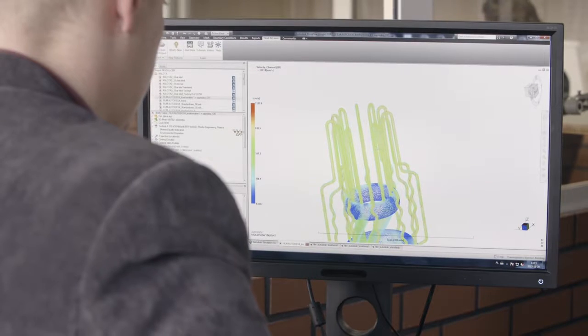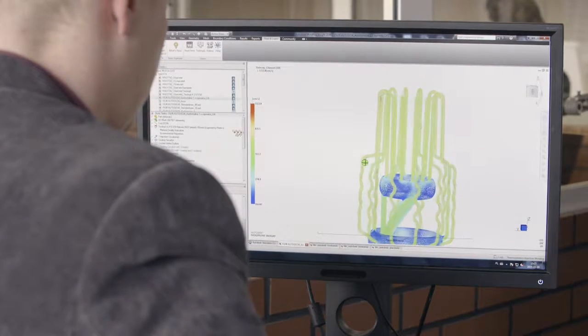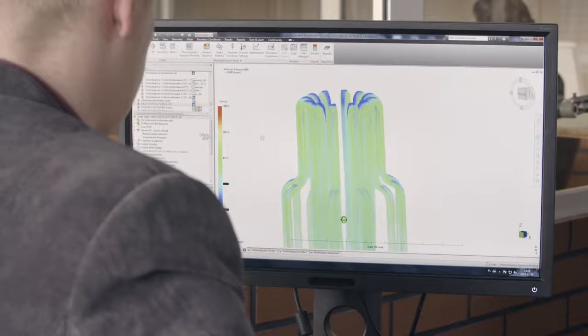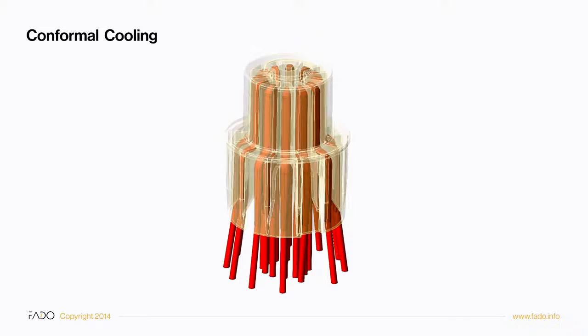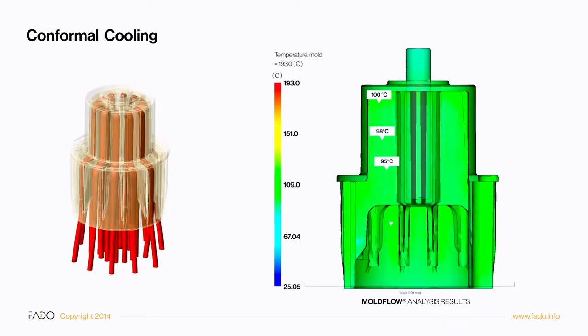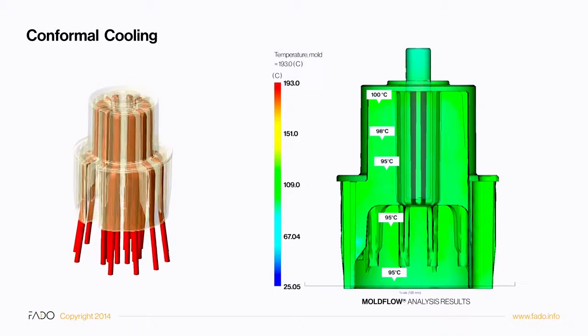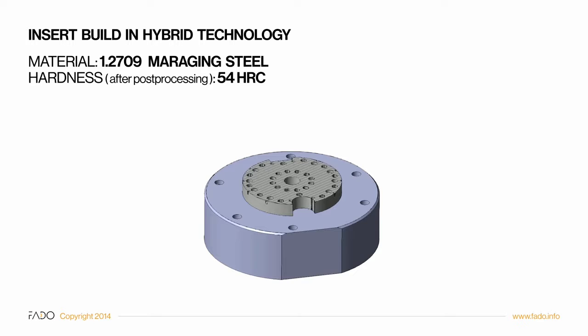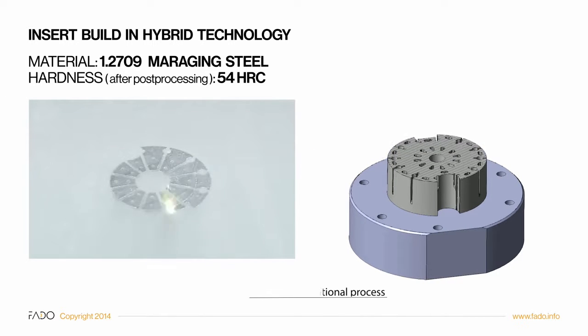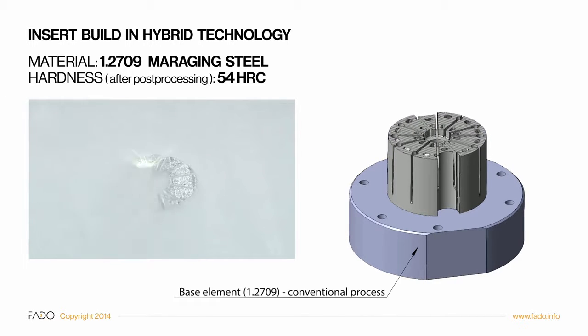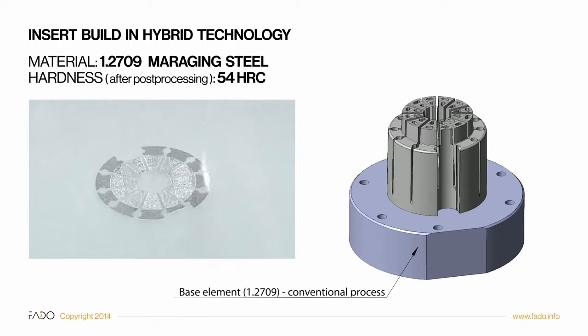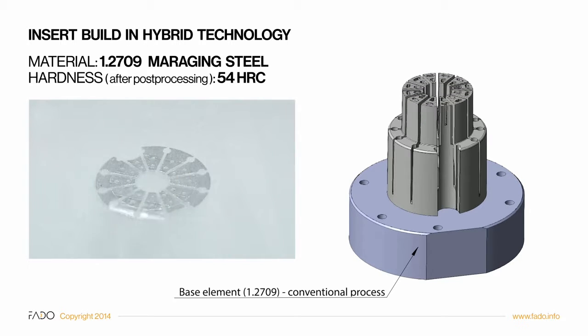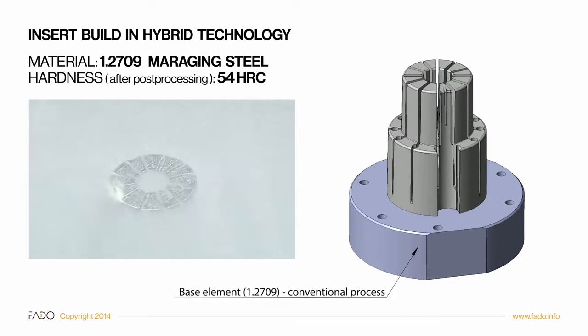Two conformal cooling designs were proposed. Although both guaranteed even temperature distribution, the second design generated lower pressure losses and was easier to clean. It is also a hybrid design. The bottom part was manufactured conventionally and only the fragment which required cooling optimization was additively built on top.